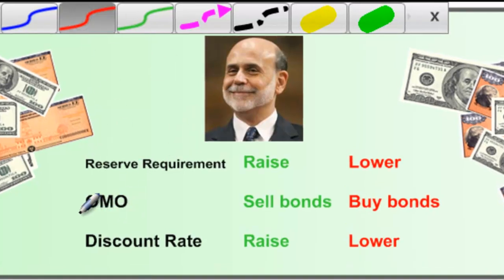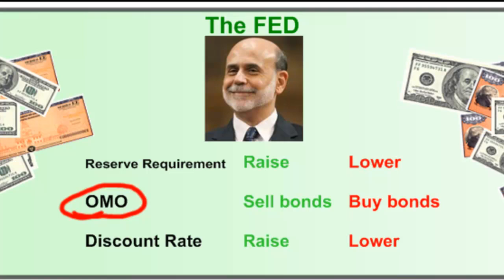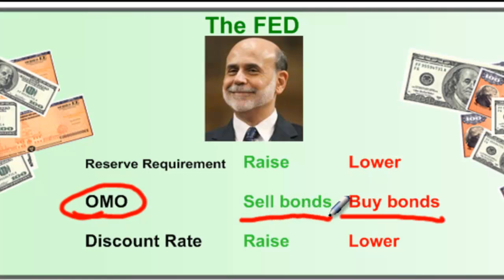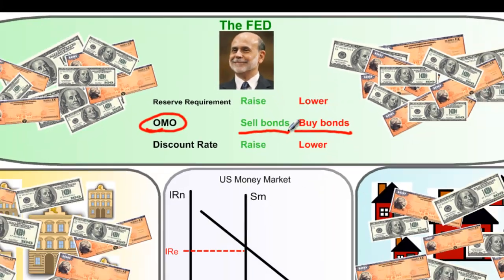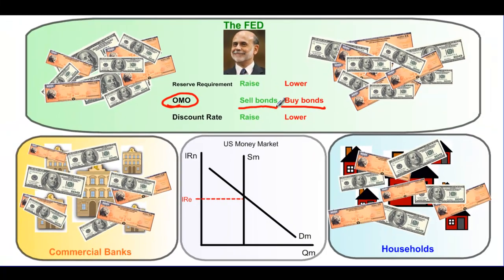The next tool is OMO — Open Market Operations. This is, in fact, the most regularly used tool of monetary policy by the United States Fed. This involves the Fed either buying bonds or selling bonds from commercial banks and households in order to increase or decrease the supply of money in the economy. Typically, the Federal Reserve will meet quarterly — once every few months — to determine whether it will buy bonds, sell bonds, or maintain the level of bonds it currently holds.